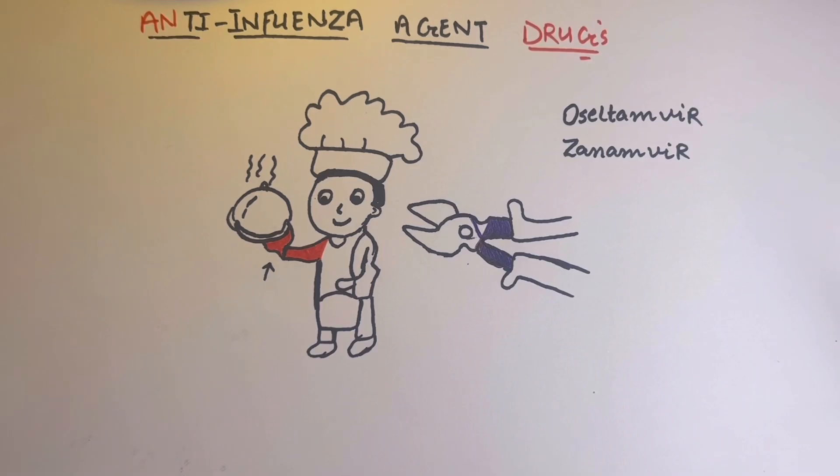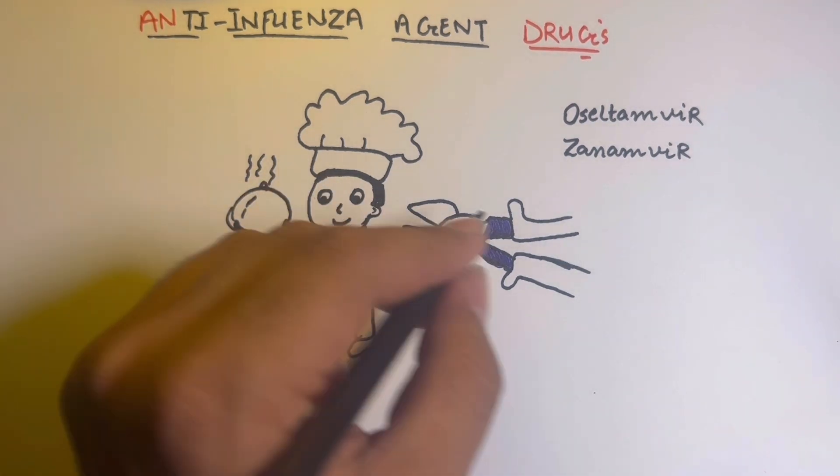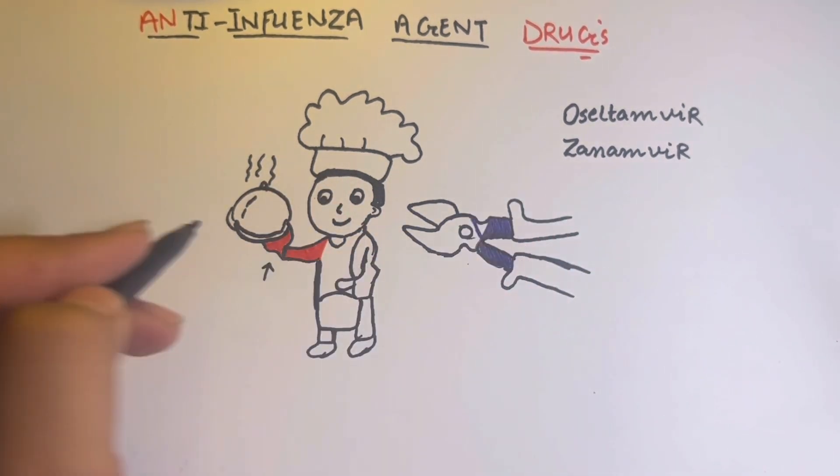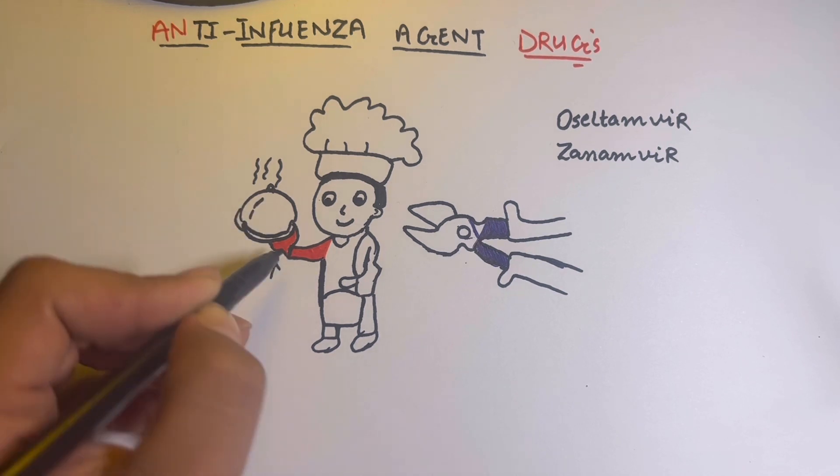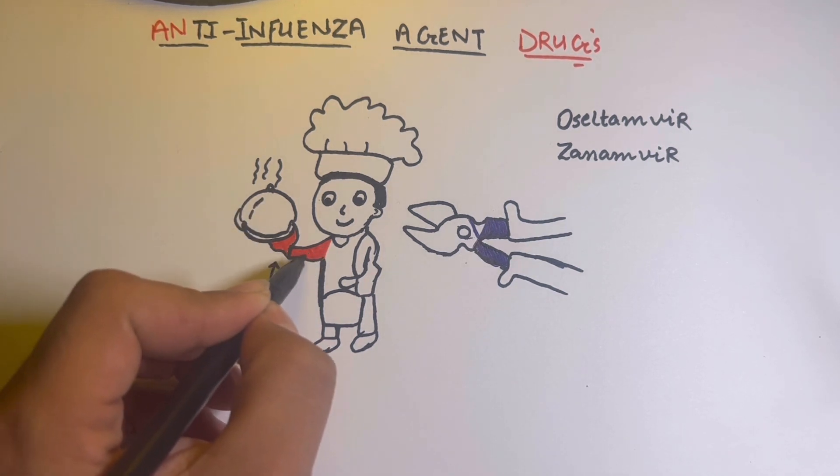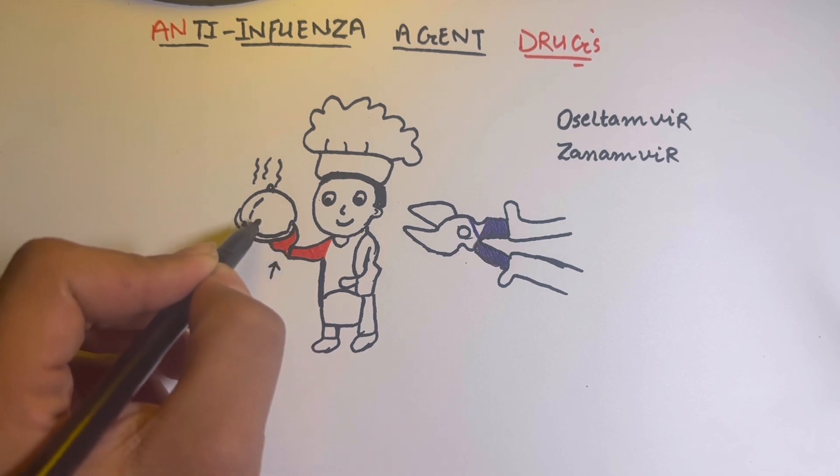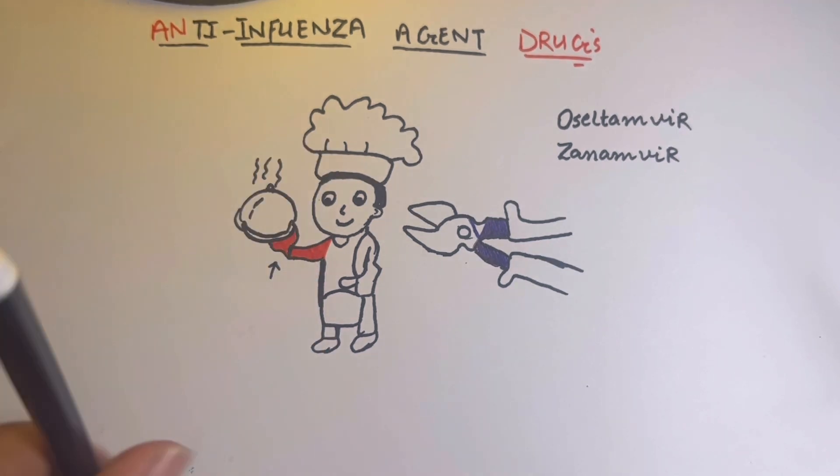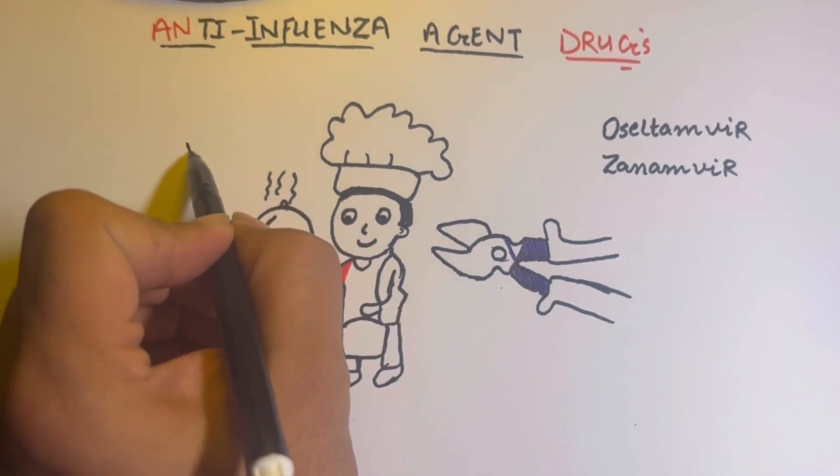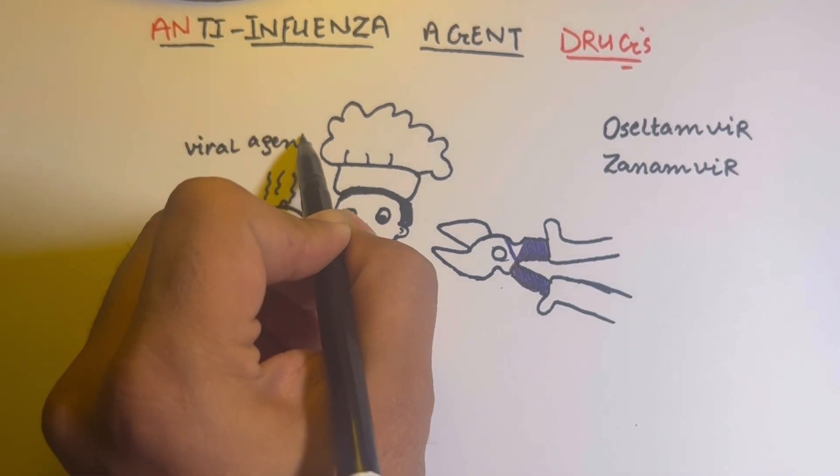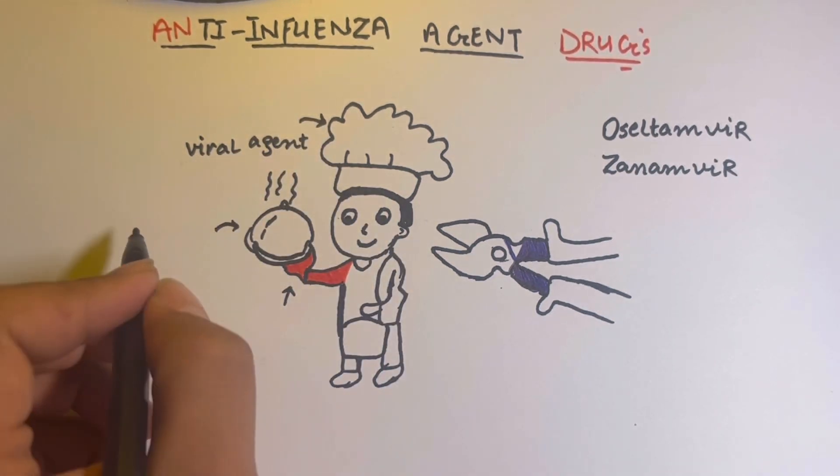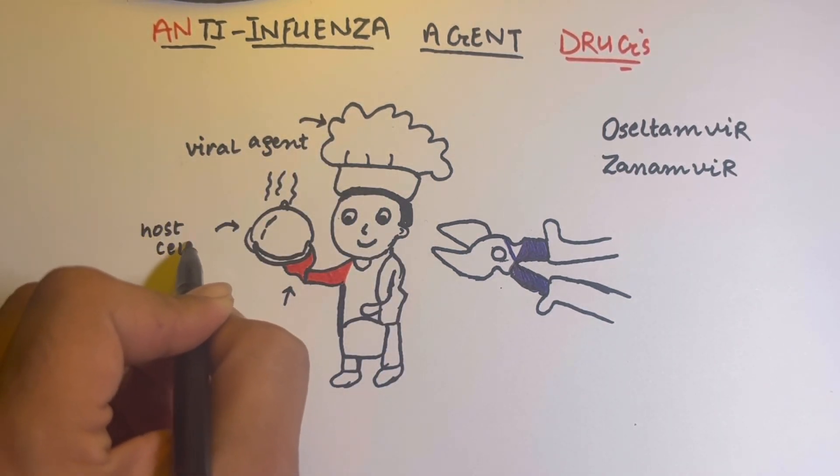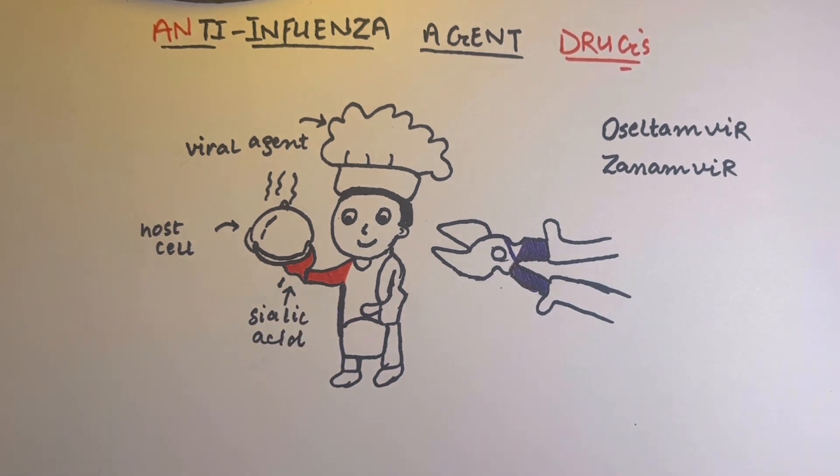Let's see the normal mechanism, then discuss the drug function. This food shows the host cells. Every host cell contains sialic acid receptors, shown by the red hand, which connects with the host cell. This cap shows a viral agent, and the food shows normal body cells and sialic acid receptors.